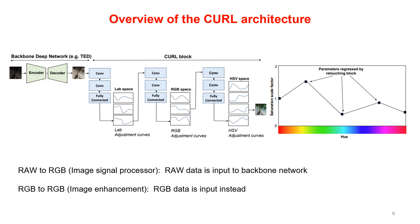The overall architecture of CURL is shown on this slide. First, data is passed to the backbone network, which extracts features and enhances the image. We implement this as an encoder-decoder network called TED, explained on the next slide. TED outputs a tensor consisting of a three-channel image along with feature maps. The tensor is then input to a CURL block, which estimates and applies enhancement curves in three successive color spaces: LAB, RGB, and HSV.